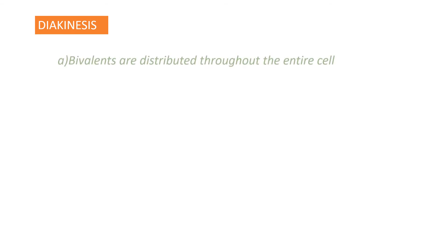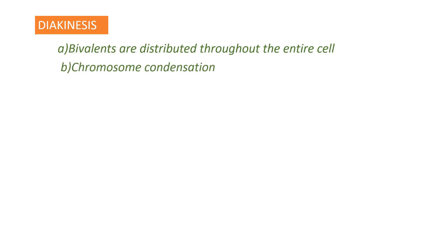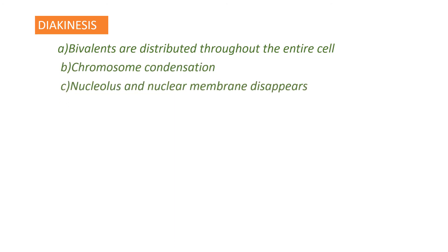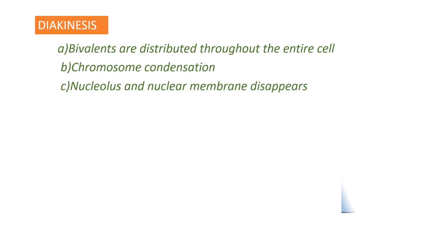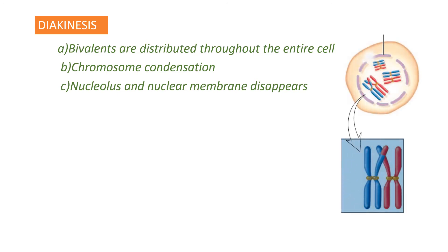The last sub-stage of prophase I is diakinesis. During this stage, the bivalents are distributed throughout the entire cell and there is further chromosome condensation. By the end of diakinesis, the nucleolus and nuclear membrane disappear.